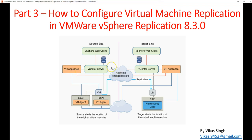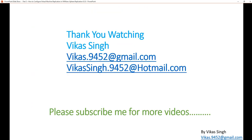That's all about how to configure VMware vSphere Replication. In the next videos we'll perform the failover, see how to recover virtual machines at the DR site, and then how to send those virtual machines back to the production data center after an outage. Thanks for watching — please subscribe for more videos, and if you have any questions related to this video please post in the comments below. Thank you, bye-bye.